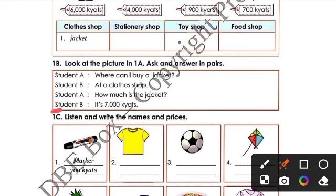Student B answers: It is 7000 kyats. That's the price of the jacket.